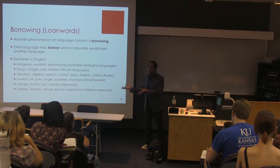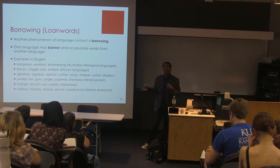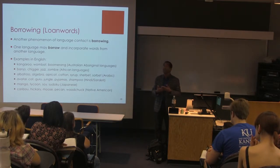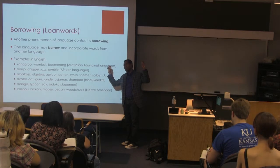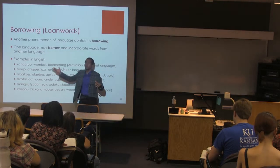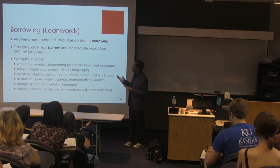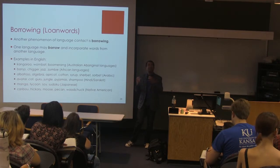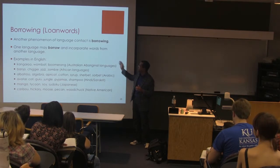One language may borrow — or actually incorporate — words from another language, and English is really good at this. The borrowing lets us know what different communities we've contacted throughout our history as English speakers. We can do this by simply going through a dictionary and finding all the non-English words. It's kind of tough to say what is an English word, because a lot of you would agree kangaroo is an English word, but it originally came from some Australian Aboriginal language. Lots of different languages are represented here.